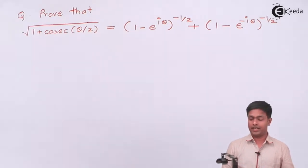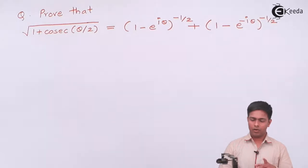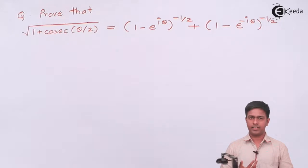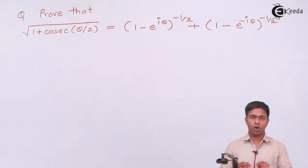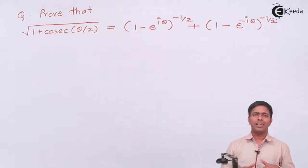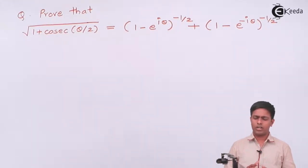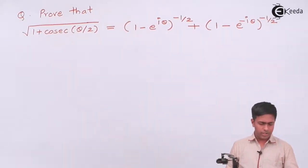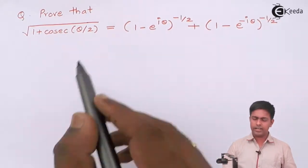The right-hand side has e^(iθ), which clearly shows it's a complex number. If you're thinking to convert e^(iθ) into cos θ + i sin θ and then solve by trigonometry, you're absolutely correct, but that is the long process. So let's talk about the shortest way.